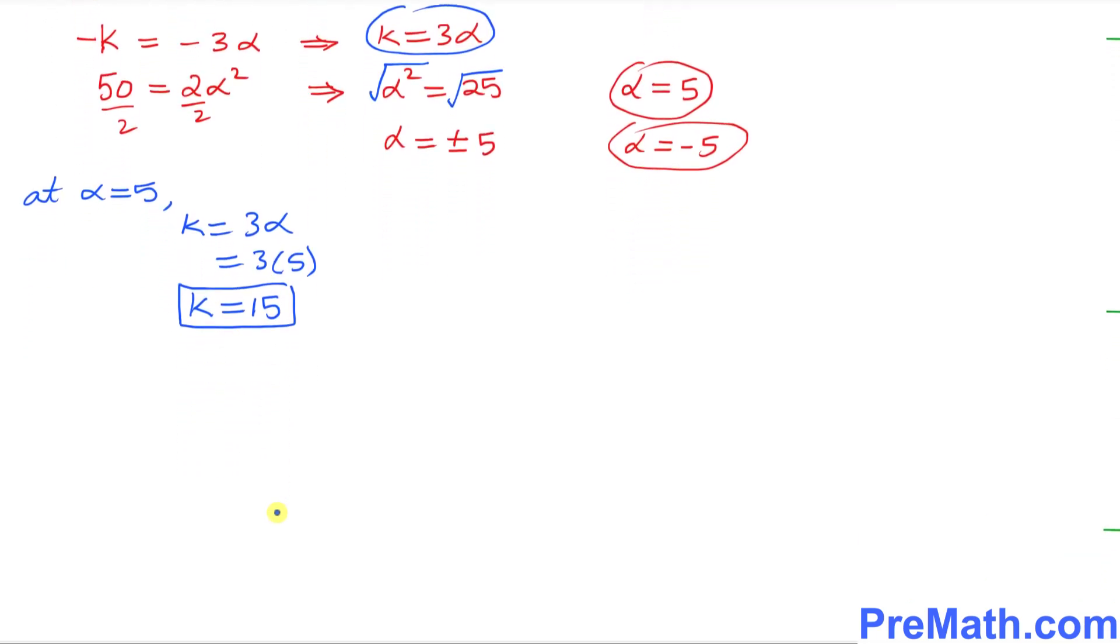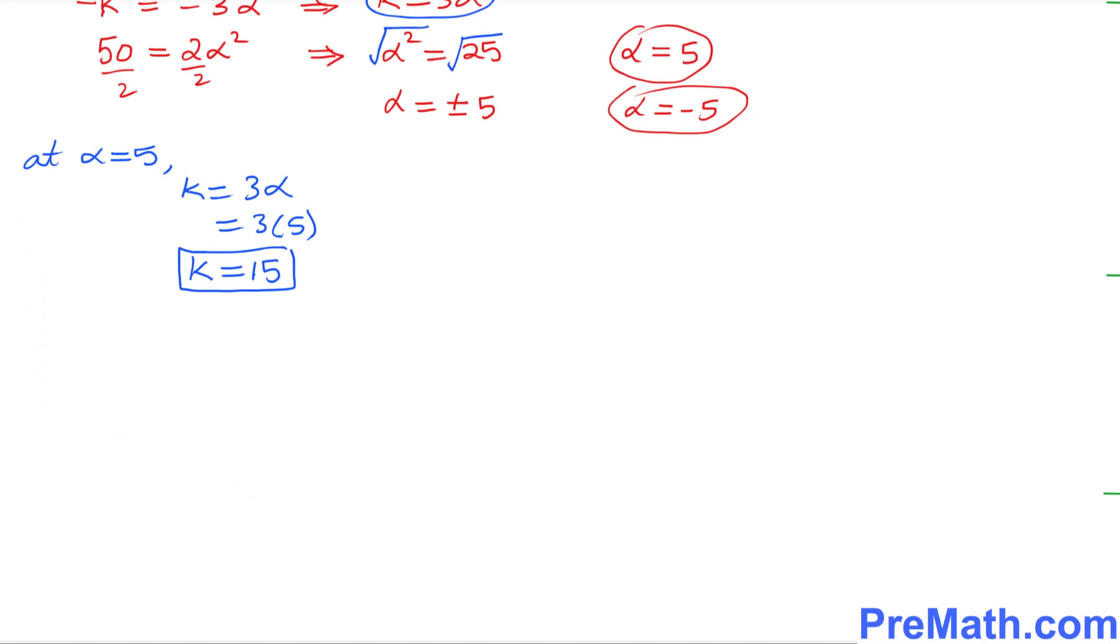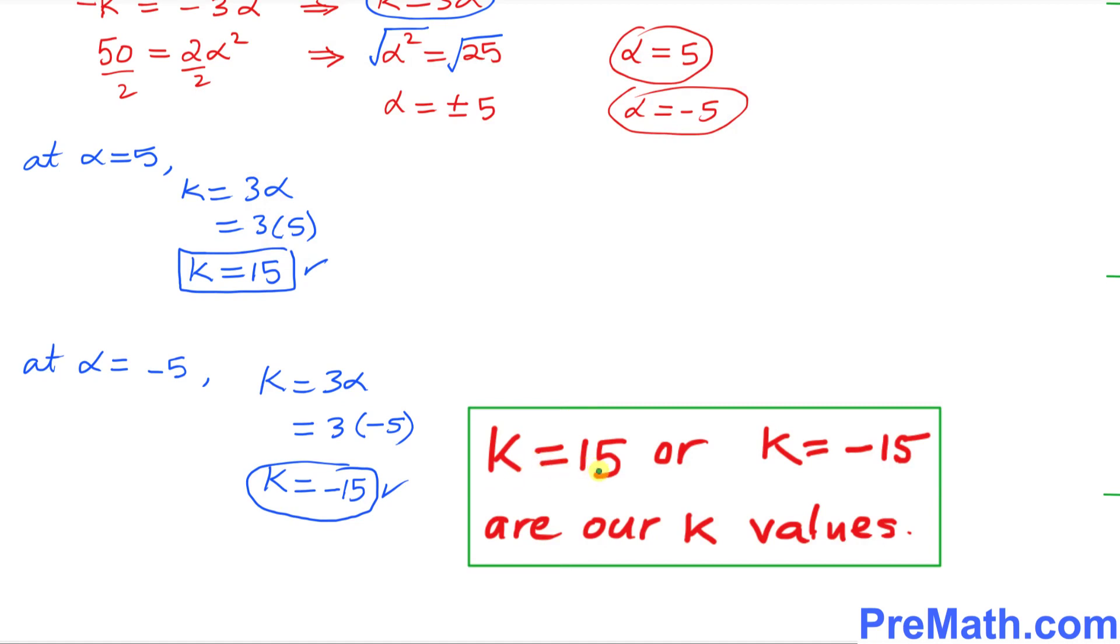Now at alpha equals to negative 5, we know that k equals to 3 alpha. Let's fill in the blanks: 3 times negative 5 equals negative 15. So we got two k values: positive 15 and negative 15. Thus our answer turns out to be k equals to 15 or k equal to negative 15.